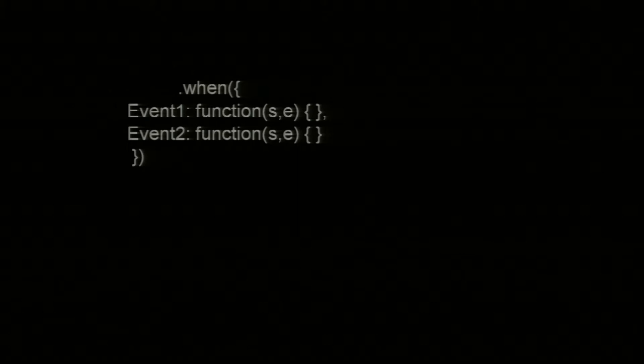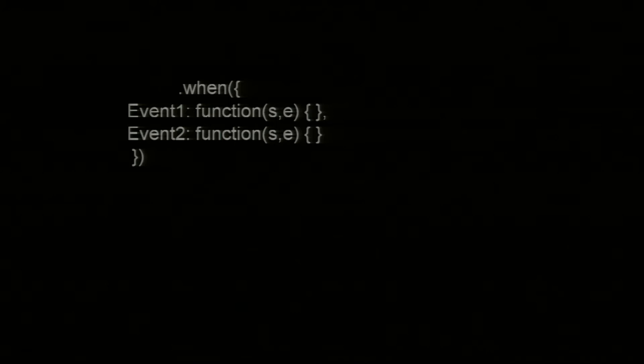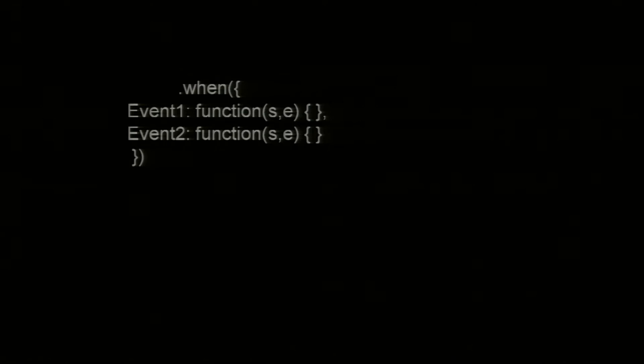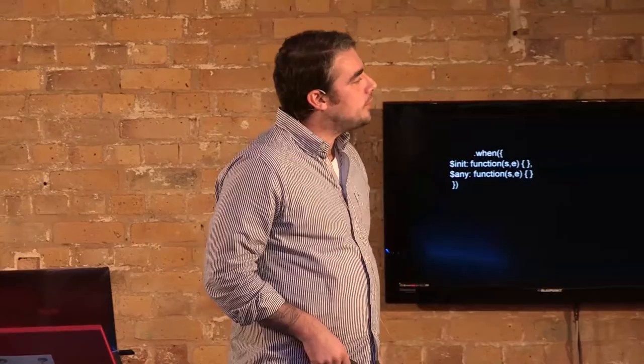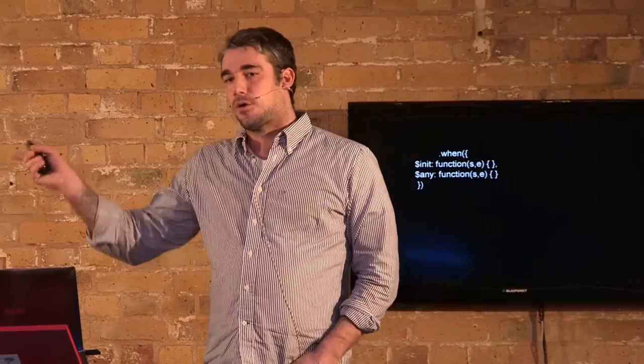The first thing is I need to be able to map events back to functions, and the easiest way to do this is a pattern match. The language we're using is JavaScript. Essentially, I'm mapping event one to a given function and event two to a given function - these are actually event types. This gives me f1 and f2 matching as I go back through the event stream. There are some special ones: '$init' is the init function, allowing you to initialize state before your first call. '$any' will map a function to any event you actually get back on a stream.